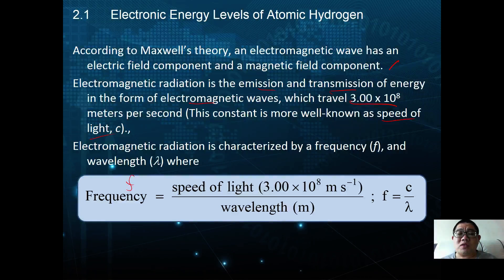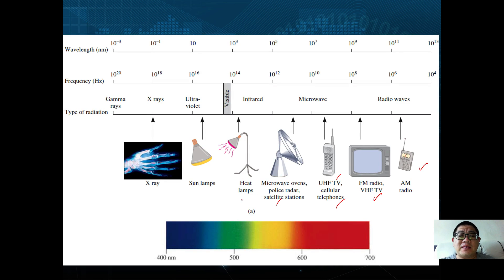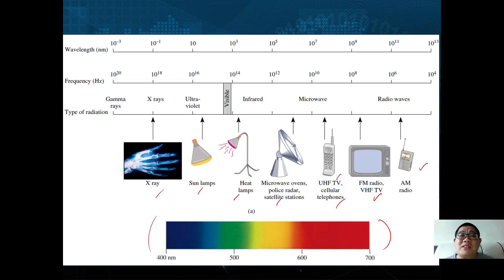Here is an example of a series of wavelengths that we are familiar with, ranging from the lowest frequency of AM radio, FM radio, UHF TV, cellular phones, microwave ovens, heat lamps, sun lamps, and X-rays. These are the types of radiation at specific wavelengths and frequencies. Also shown here is the visible light spectrum, which is a continuous spectrum.